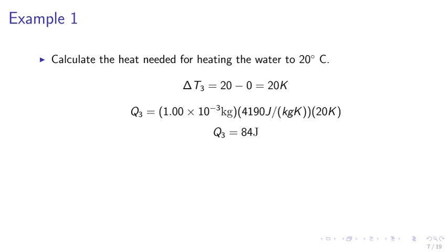Next, we may calculate the heat needed for 20 degrees Celsius, which is Q3 equals 84 joules. We use the specific heat of water, 4190 joule per kilogram Kelvin. The total heat needed for the process is Q1 plus Q2 plus Q3, which is given by 460 joules.